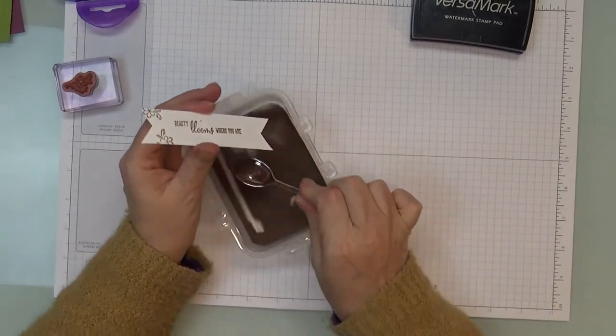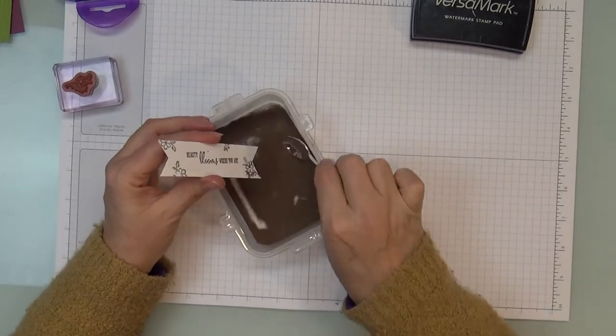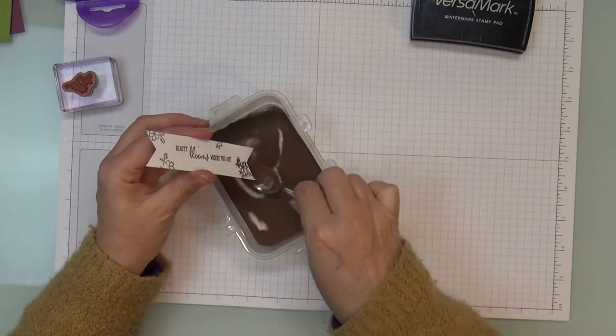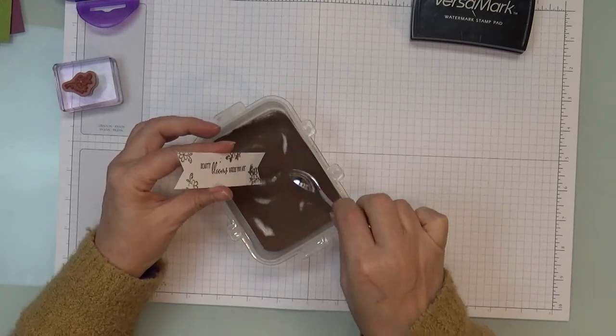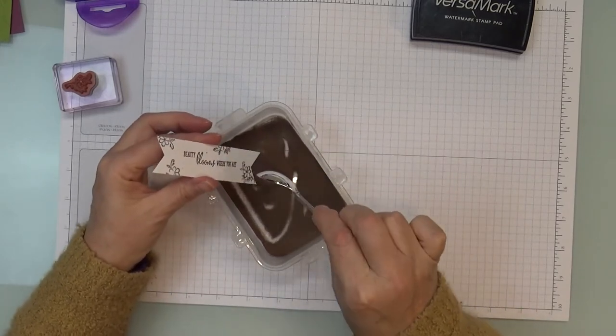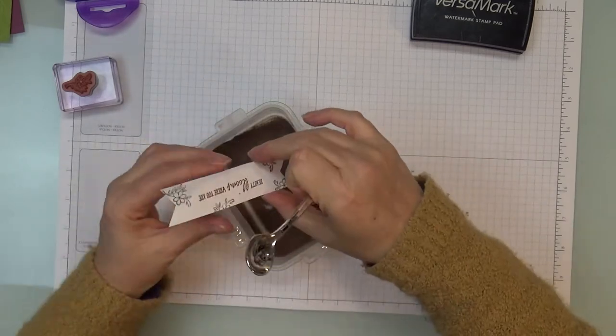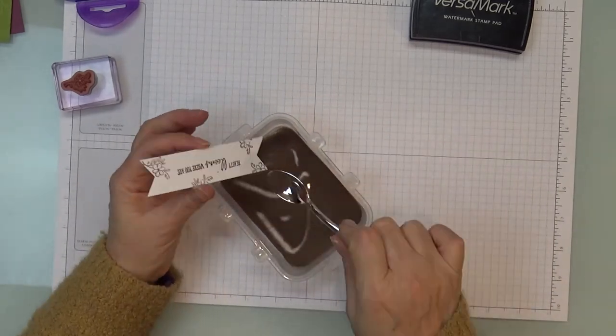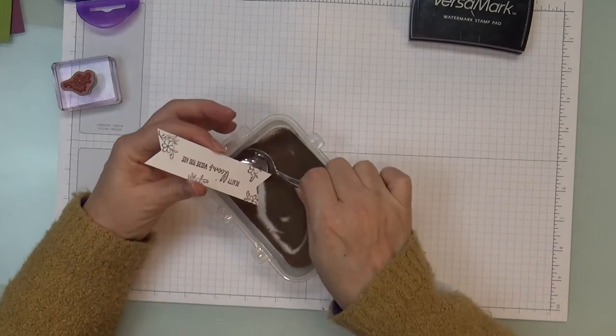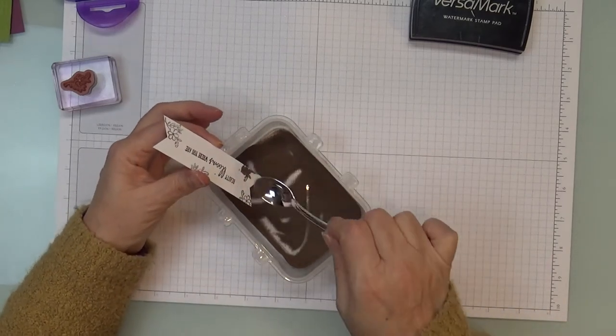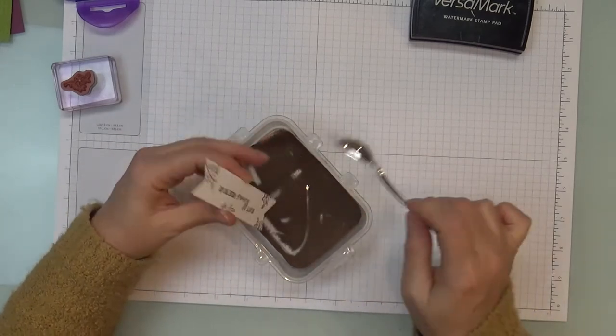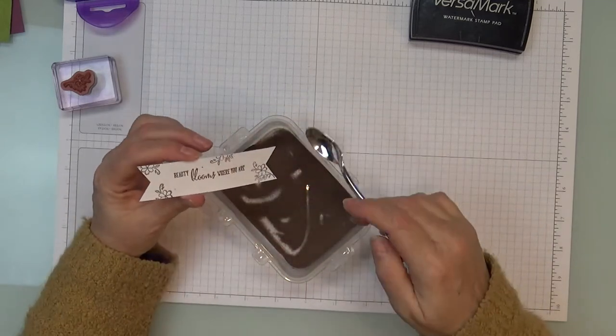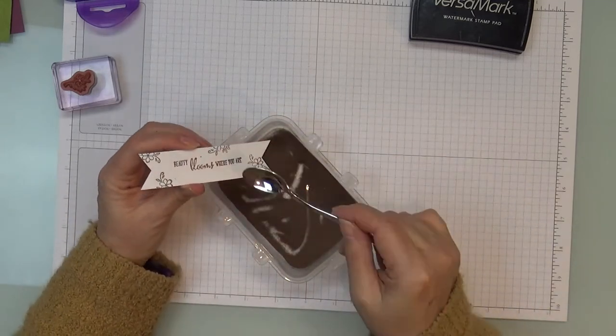But then I'm just going to put some more of the copper embossing powder. I think I need to fill my copper powder back up. I just ordered some today, actually. So you just want to make sure that you have this covered really well. Because once you heat set it, you can't go back if you missed a spot.